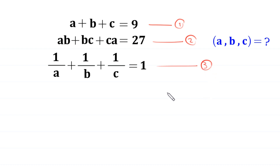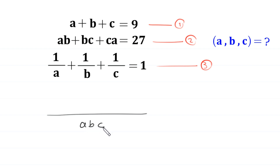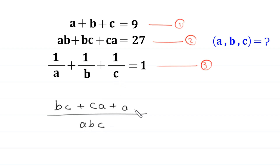First, we take the LCM of the denominators of equation 3. The LCM is abc. When we divide abc by a, we get bc; plus when we divide abc by b, we get ca; and when we divide abc by c, we get ab, and that is equal to 1.